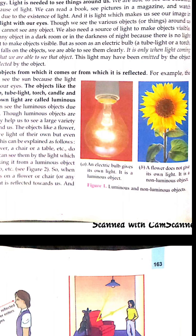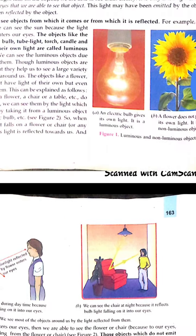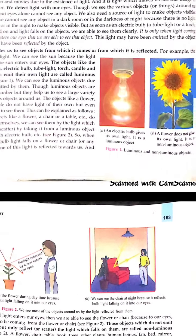If we think of furniture — beds, chairs, and tables in the room — are they able to be seen in the dark? No. We have to switch on the light to see those objects. The object which is enabling us to see with its light is said to be luminous, and the object which is able to be seen only with the help of light is known as the non-luminous object.